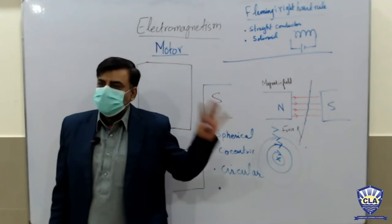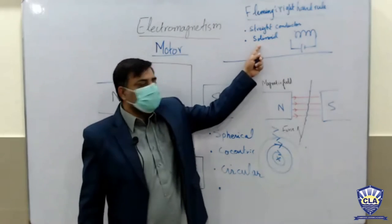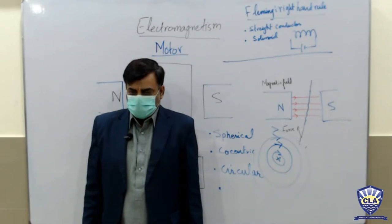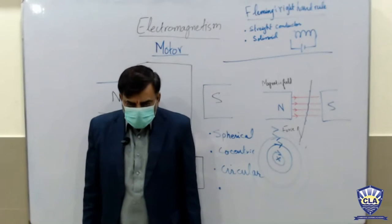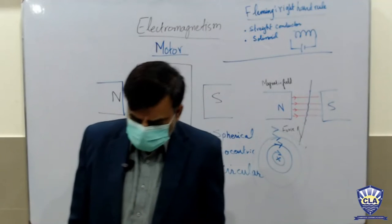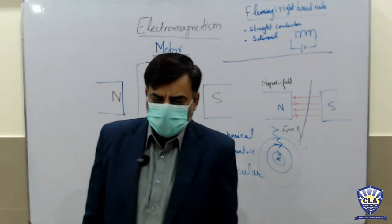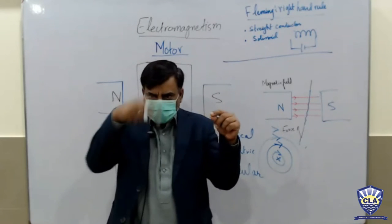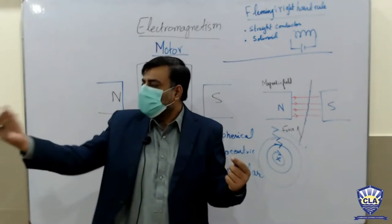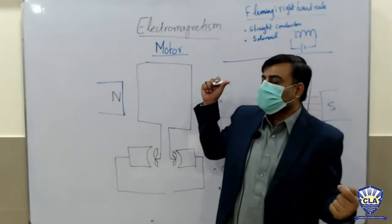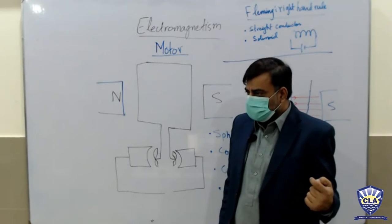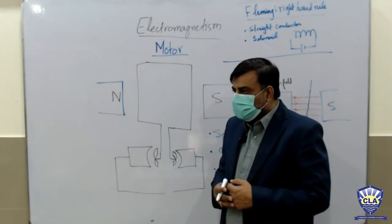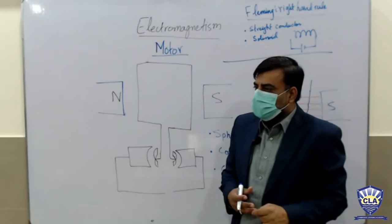So for a straight conductor, Fleming's right hand rule — and for a solenoid, which was explained to us: when we curl the fingers around the solenoid, the fingers show the direction of the magnetic field and the thumb shows the direction of current — or rather the north pole direction.